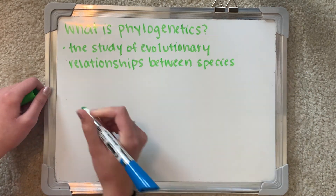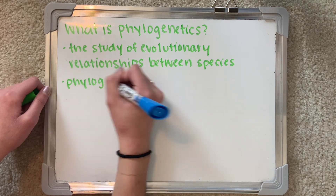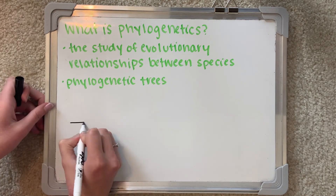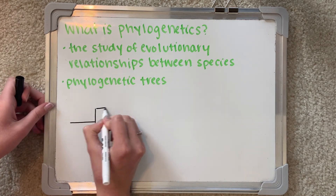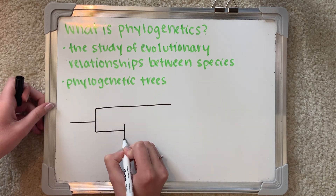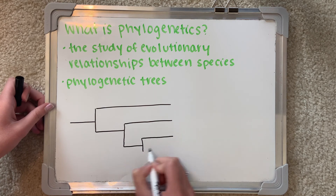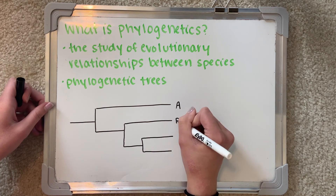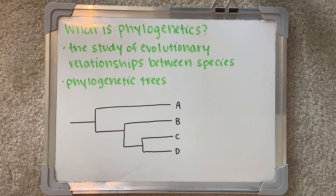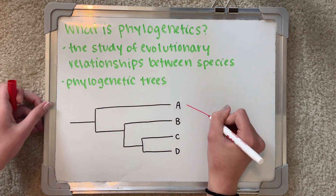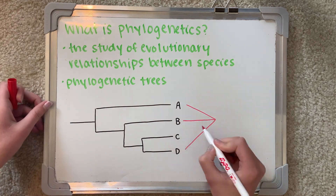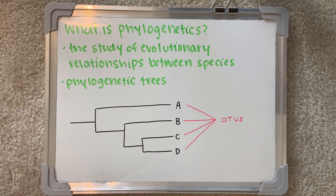To show these relationships, scientists often construct phylogenetic trees, which are graphical representations based on the genetic similarities and differences of certain groups. These groups that are included in phylogenetic trees are called operational taxonomic units, or OTUs, and they can range from individual organisms to entire species.